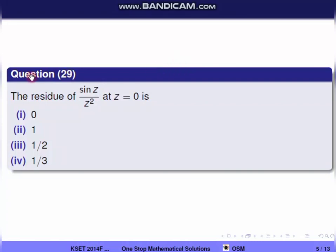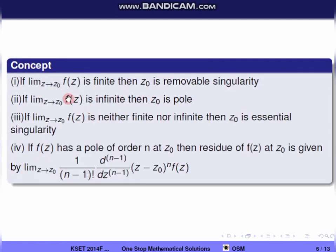Next question, question 29: The residue of sin(z)/z² at z equal to 0 is. First concept: if limit z tends to z0 of f(z) is finite, then z0 is a removable singularity. If infinite, z0 is a pole. If neither finite nor infinite, z0 is an essential singularity.